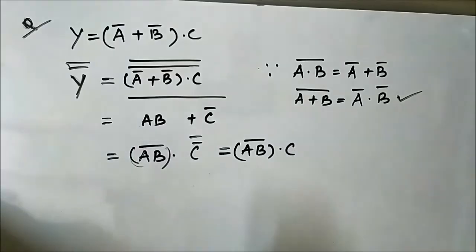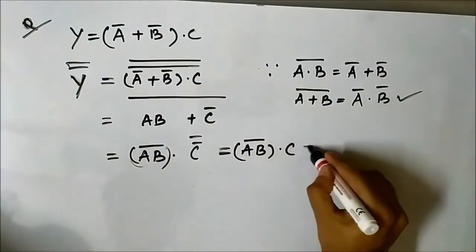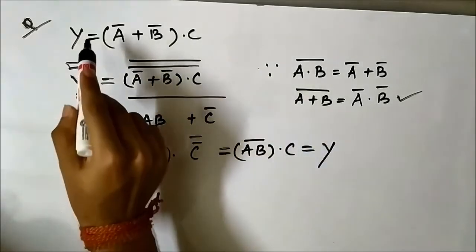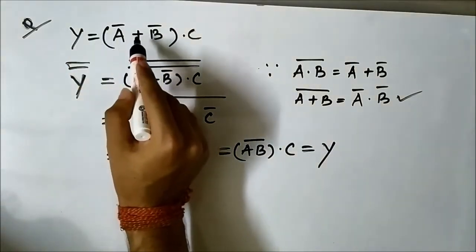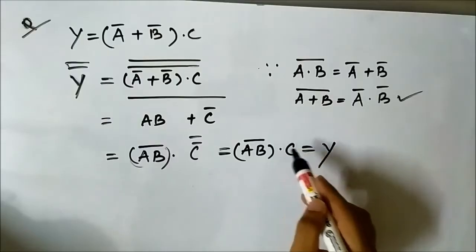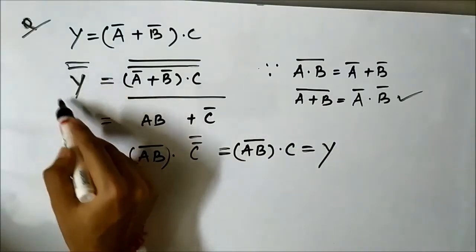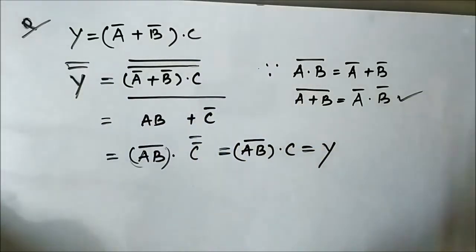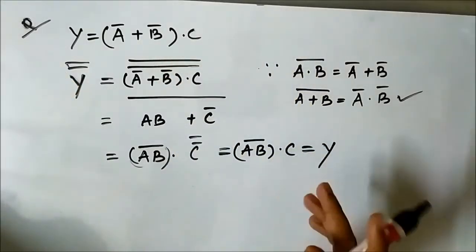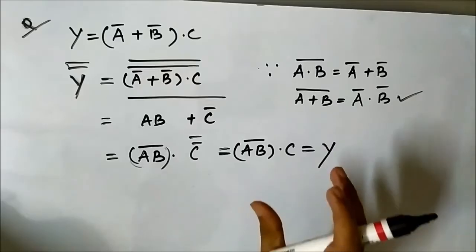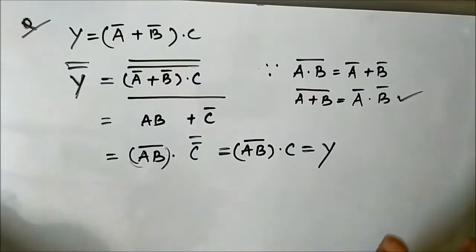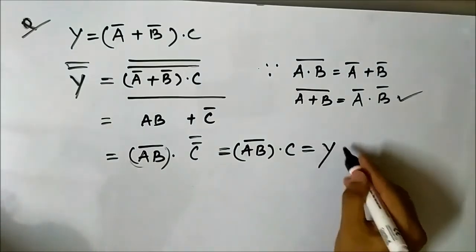Which is simply AB complement AND C. So now we can easily implement this expression using NAND gates. Y equals A complement OR B complement AND C is the same as AB whole complement AND C. There is no difference — we have just used the double complement law to modify it such that the whole expression only consists of AND terms, in product form, so that it can be easily implemented using NAND gates.